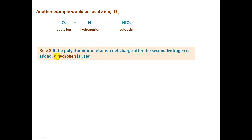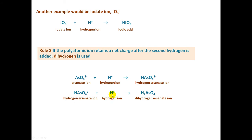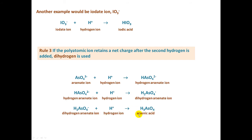Rule number three: if the polyatomic ion retains a net charge after the second hydrogen is added, we use the term dihydrogen. Here we have the arsenate ion. When we add a hydrogen to the arsenate ion, the charge is reduced by one, giving a negative-two charge — the hydrogen arsenate ion. That ion can also accept a hydrogen, and when it does the charge is reduced by one to give the dihydrogen arsenate ion. Finally, the dihydrogen arsenate ion accepts one more hydrogen, the charge goes to zero, and now we have the acid. We replace the -ate with -ic and the word ion with acid, giving us arsenic acid.